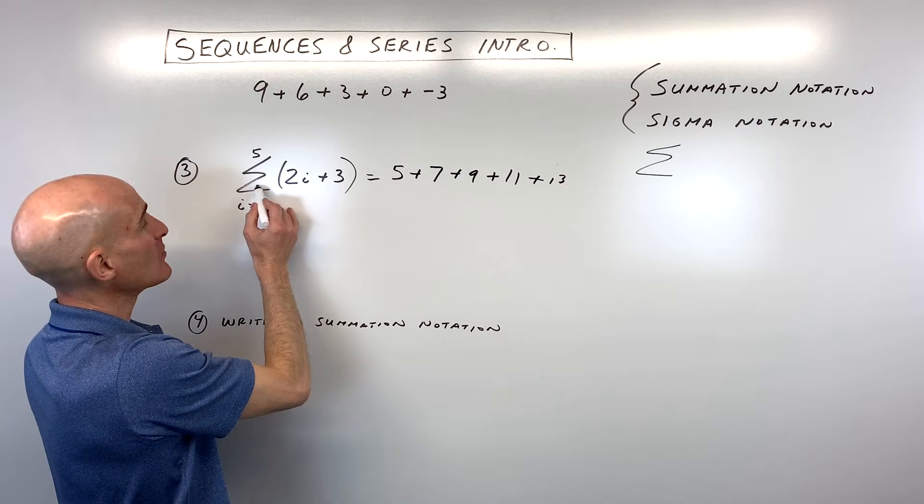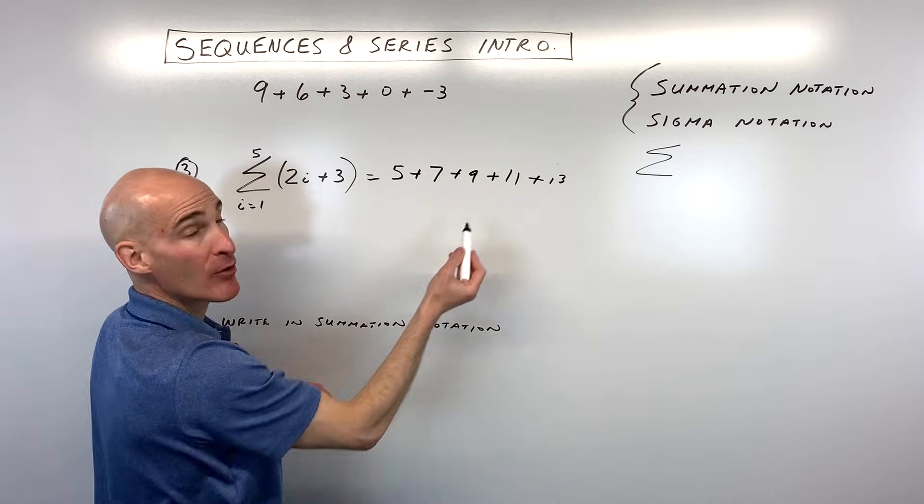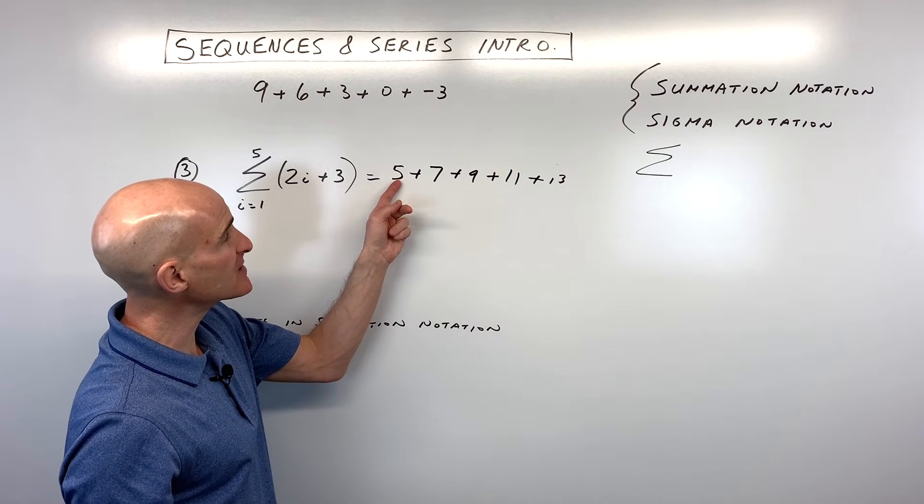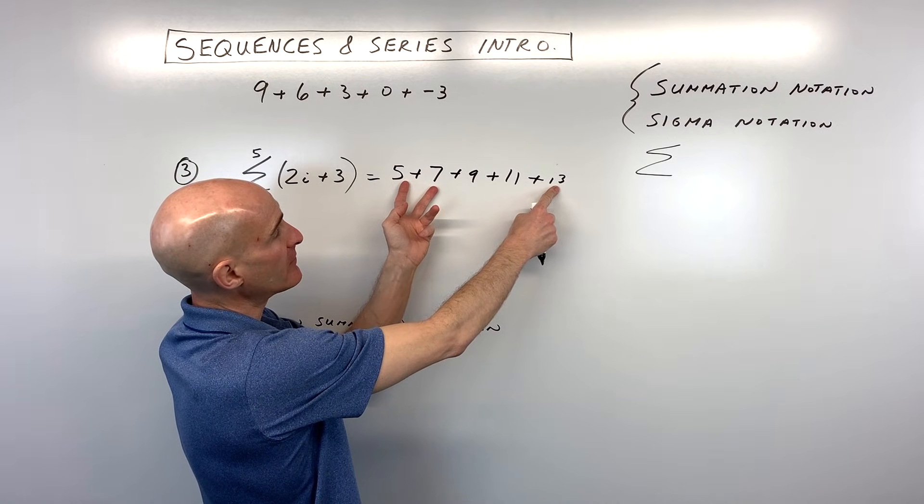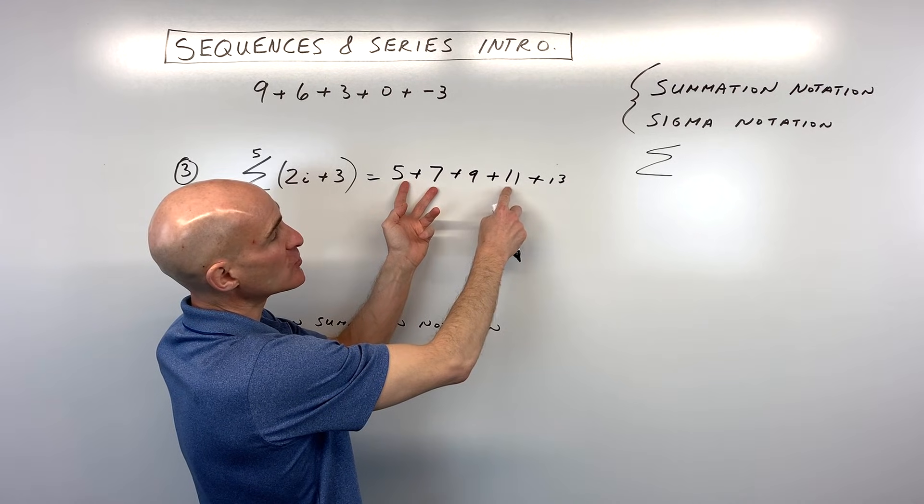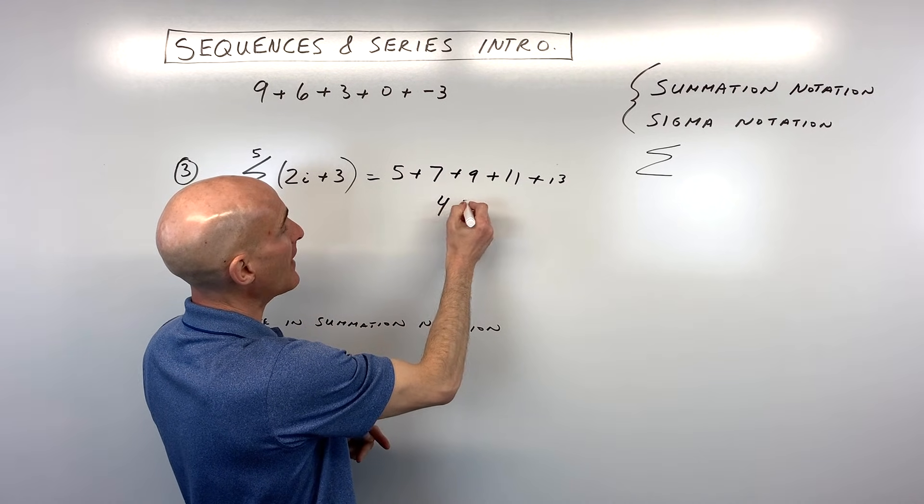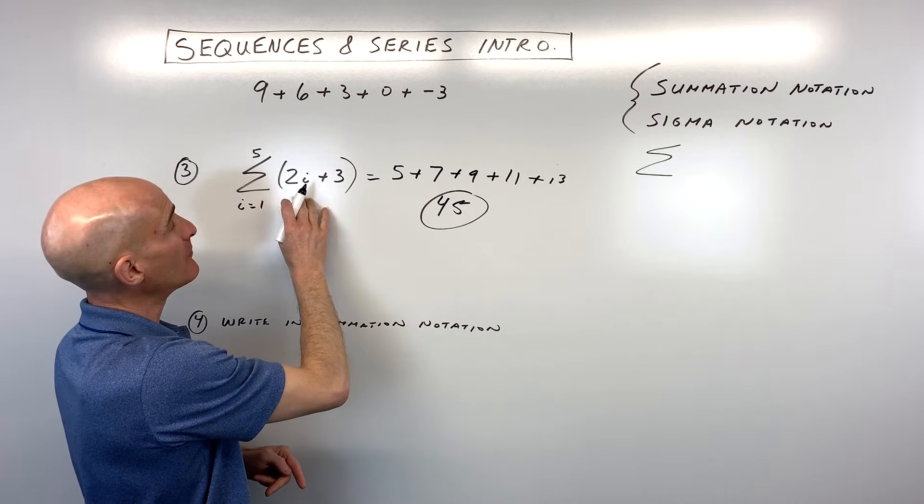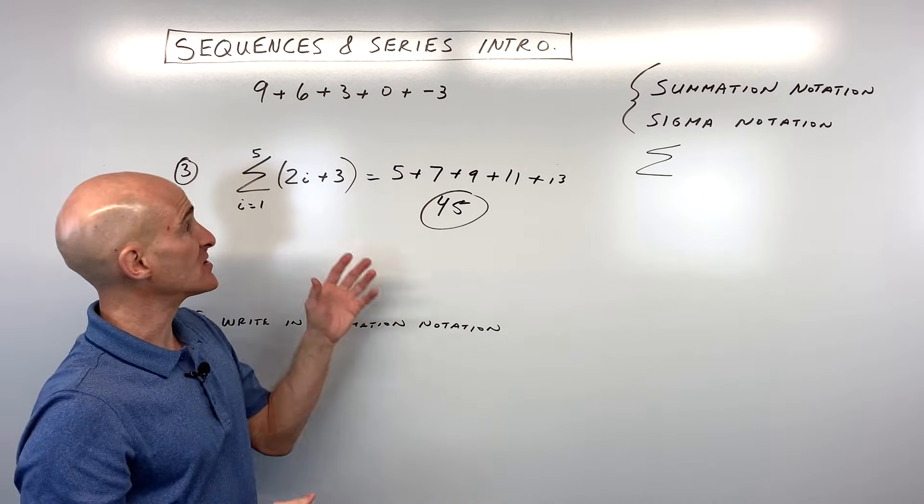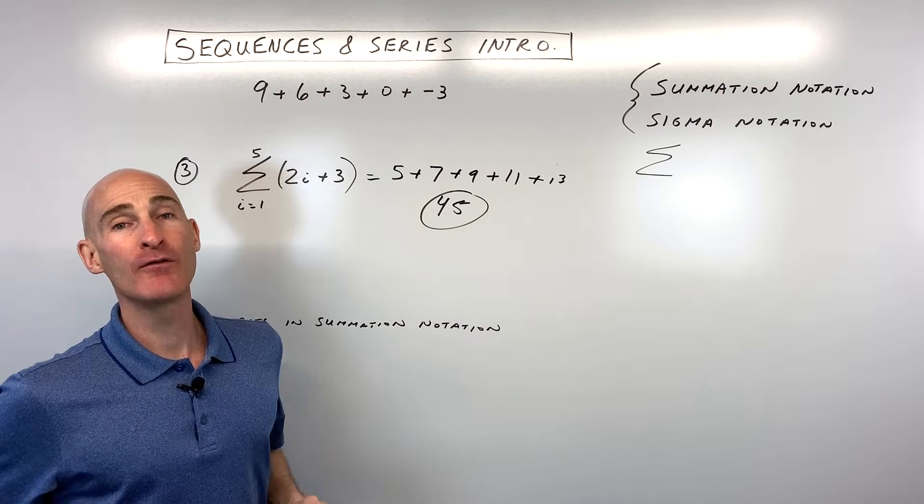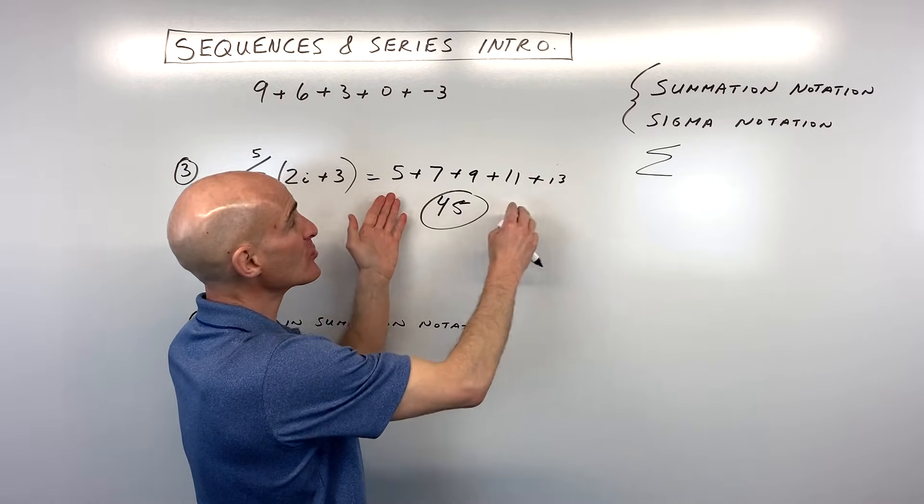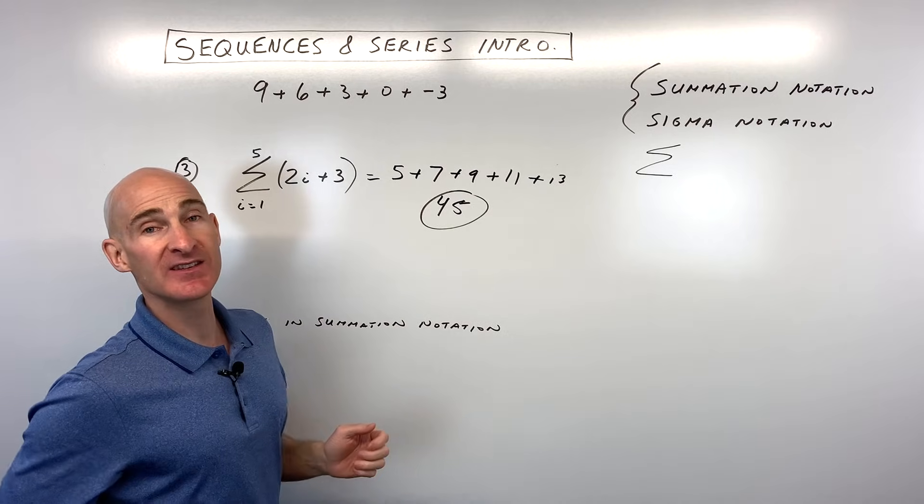And again, remember the sigma means sum, so we're actually adding up all these terms together. So let's see, 5 plus 7 is 12. 12 plus 13 is 25. 9 plus 11 is 20, so 20 plus 25, that's 45. So that represents the sum of this series. So this is just a way of writing the series in a more compact form. Instead of having to write out all these terms, you can write it in the summation notation.